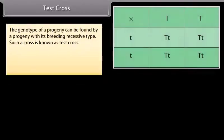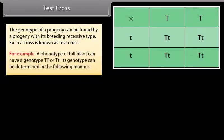Test cross. The genotype of a progeny can be found by crossing progeny with true breeding recessive type. Such a cross is known as test cross. For example, a phenotype of tall plant can have a genotype T.T. or T.t. Its genotype can be determined in the following manner.